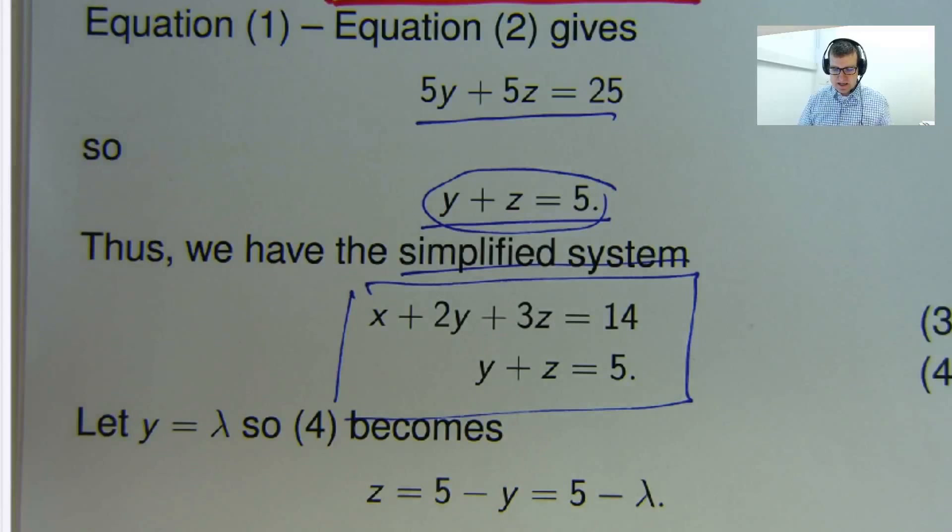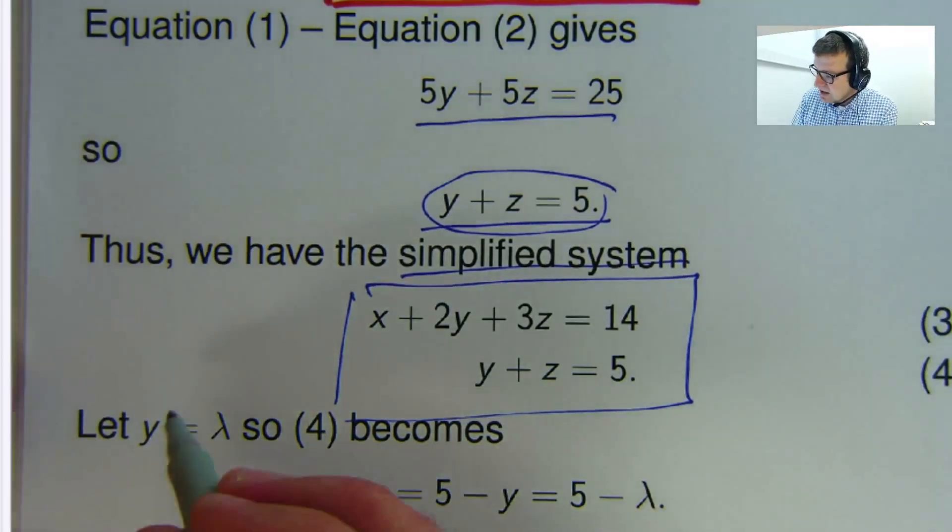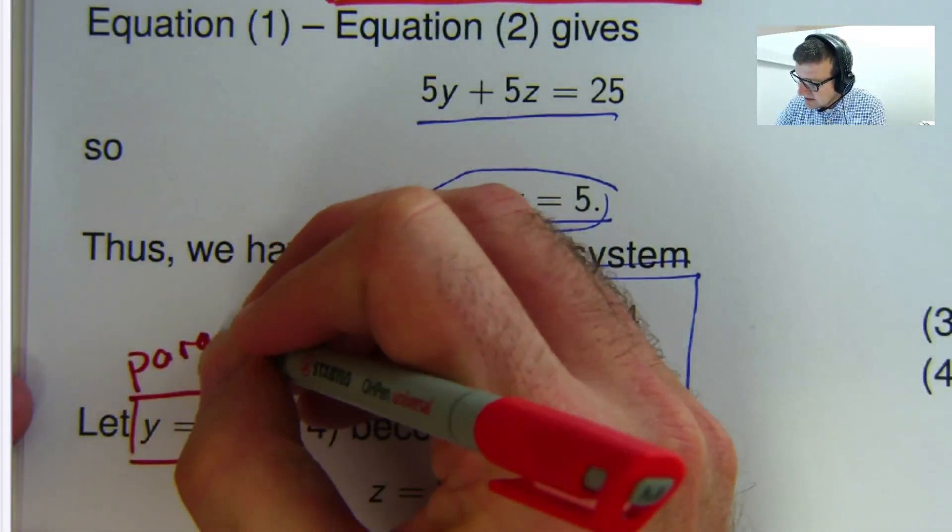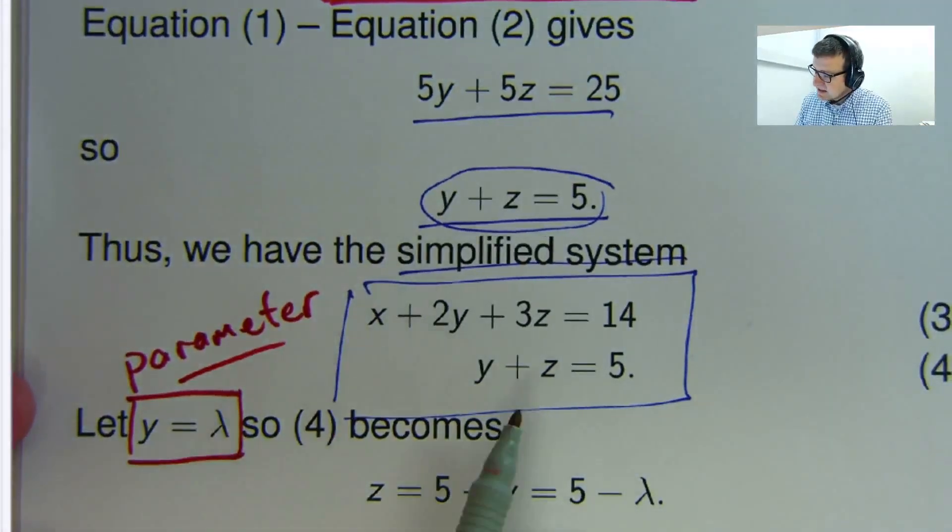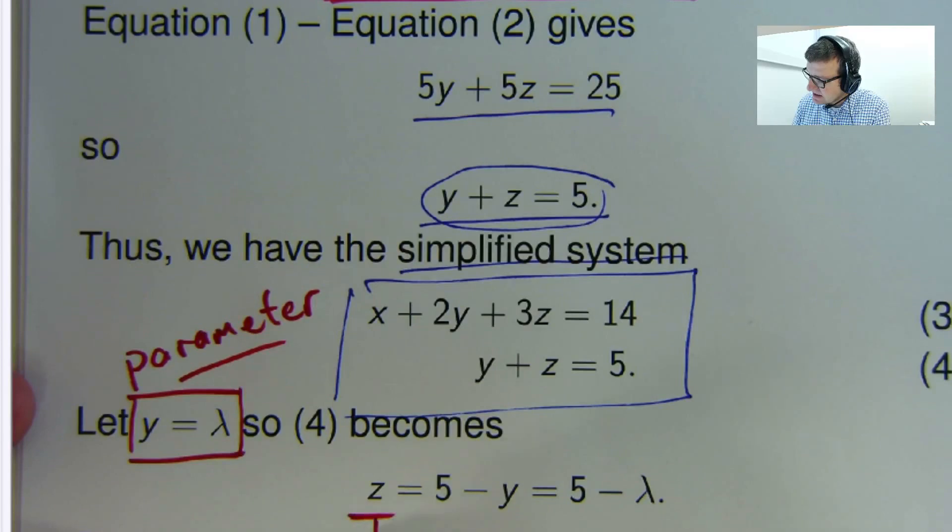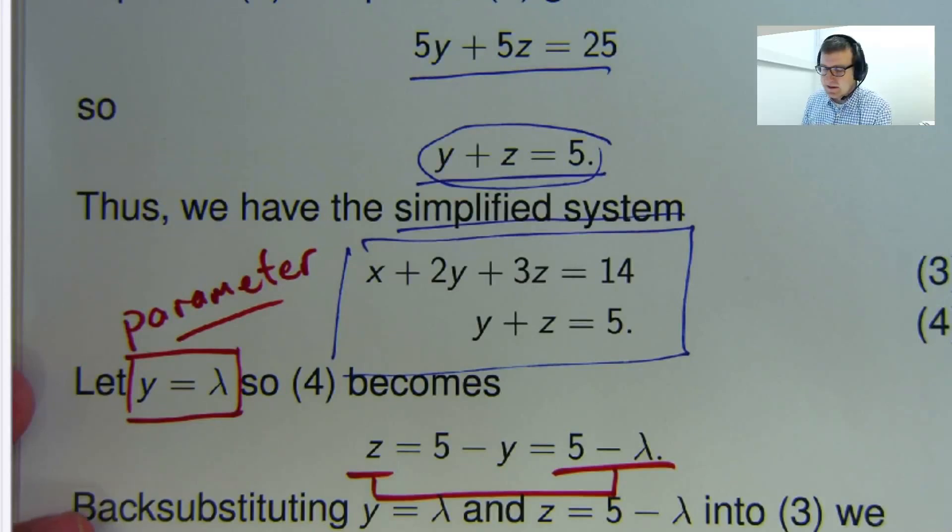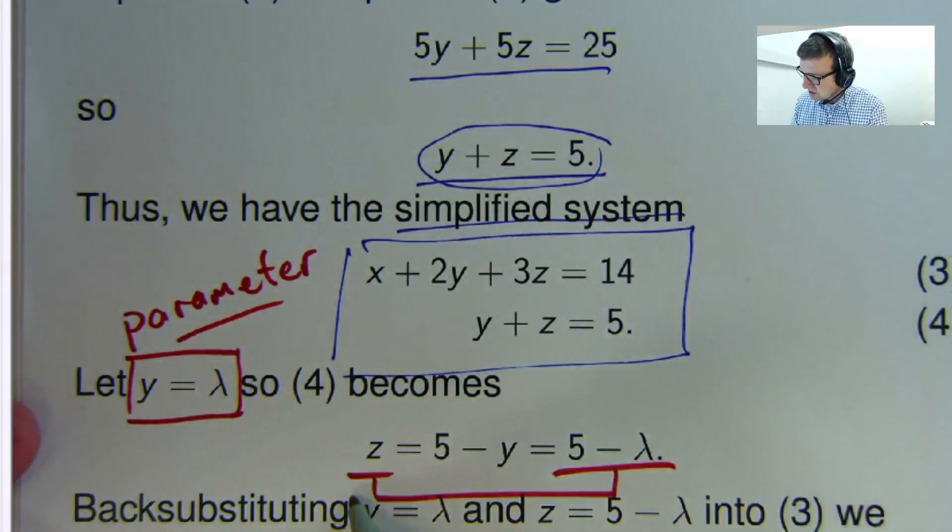So what can I do now? Well, I've got a simplified system. I can't get x and y or z explicitly. So what I'm going to do is I'm going to introduce a parameter. So in the second equation, I've let y equal lambda, and then I've rearranged it to make z the subject. So I'm going to get z in terms of lambda. So I've let y equals lambda. You could let z equals lambda if you wanted to. It's not important which one you do, but one of these.